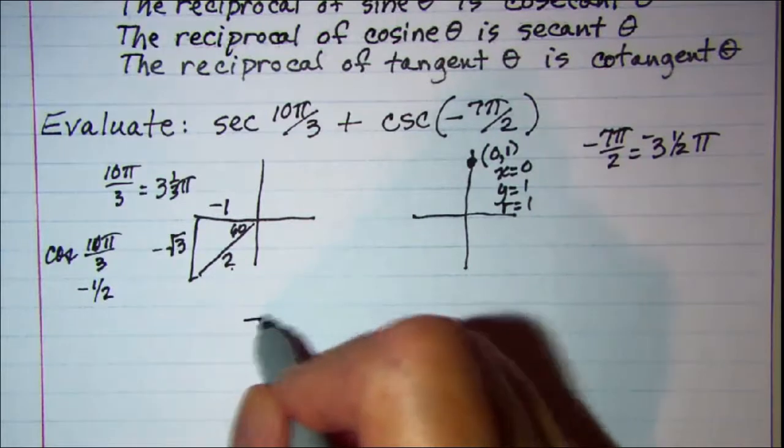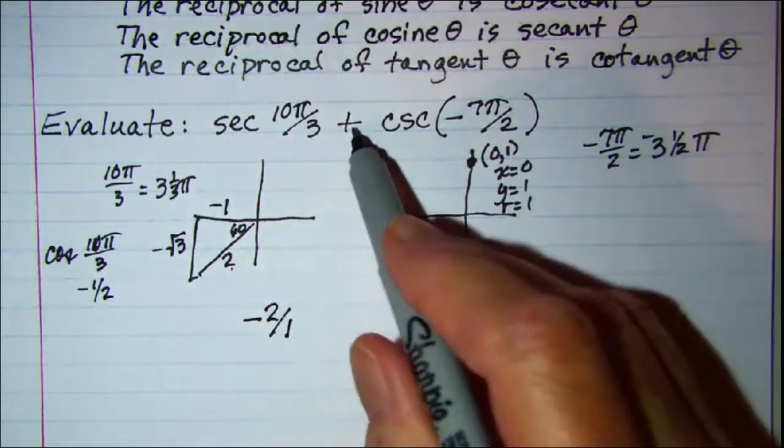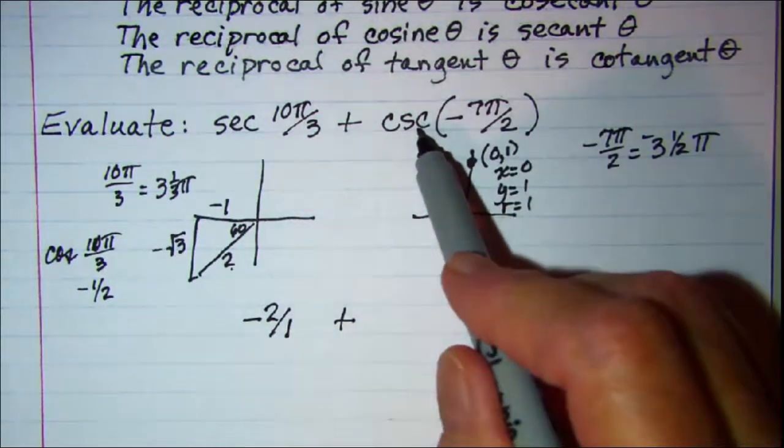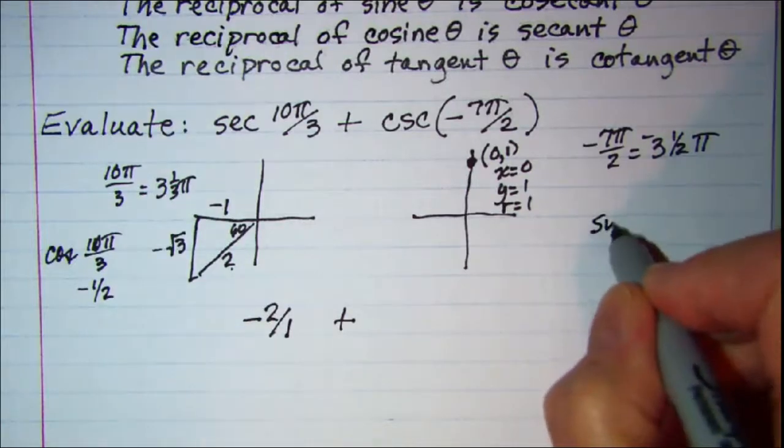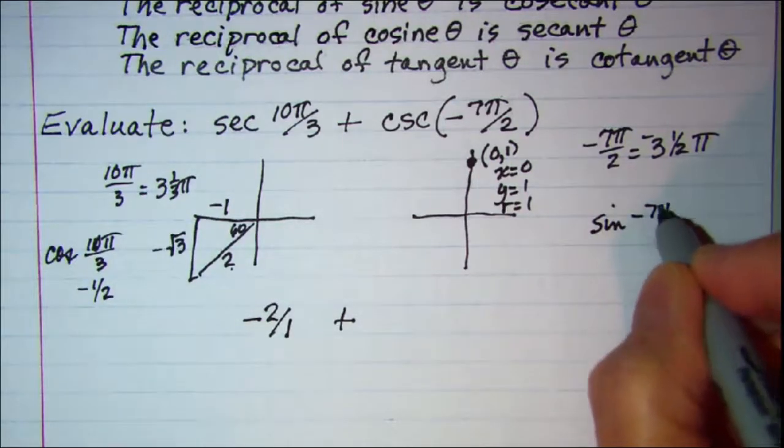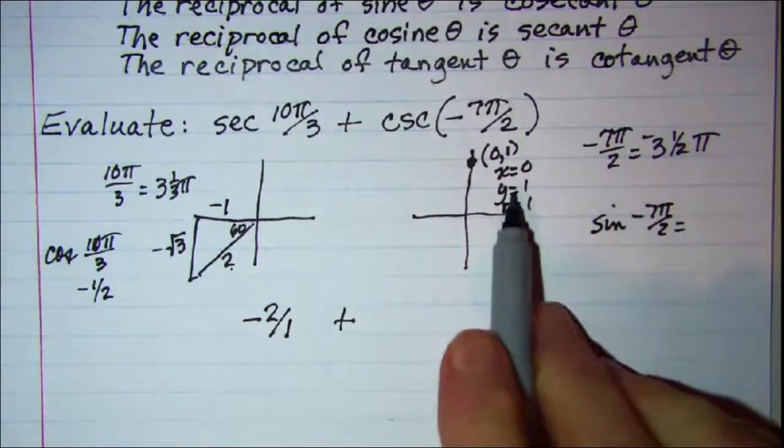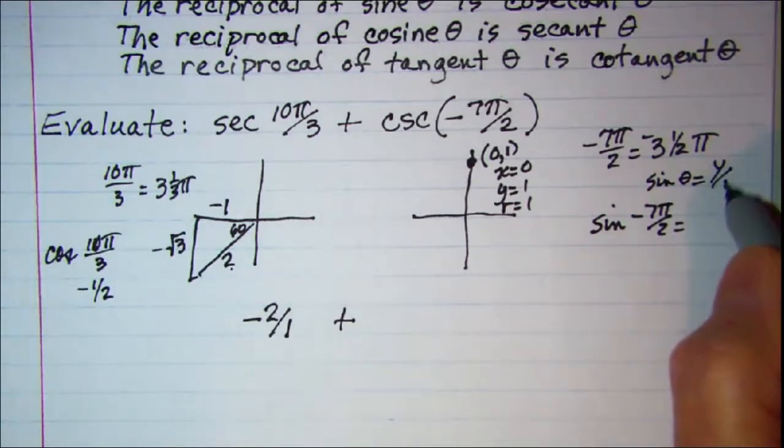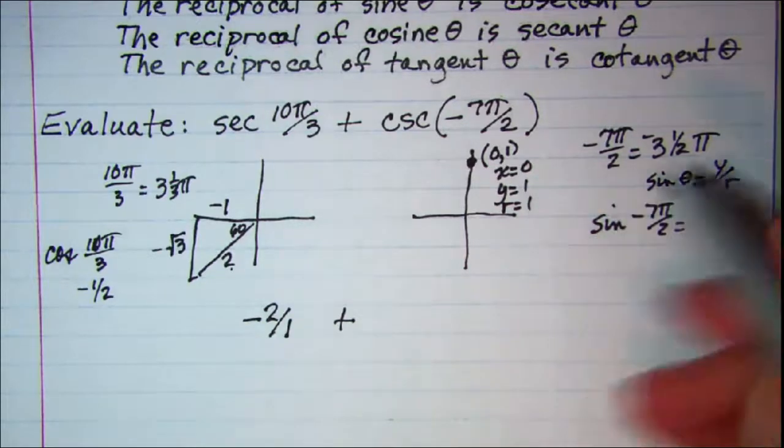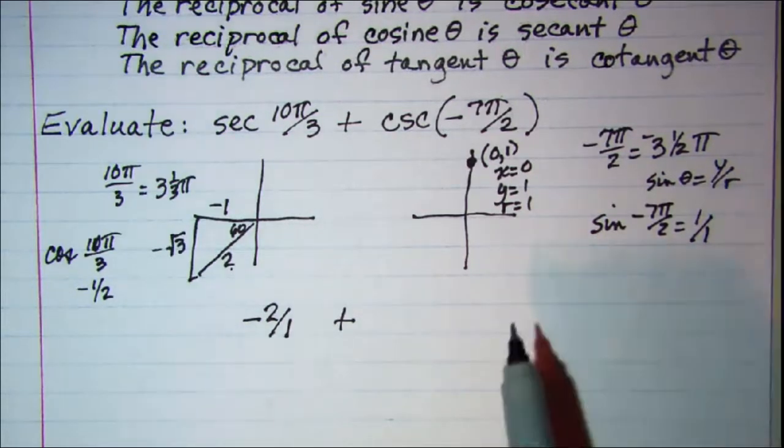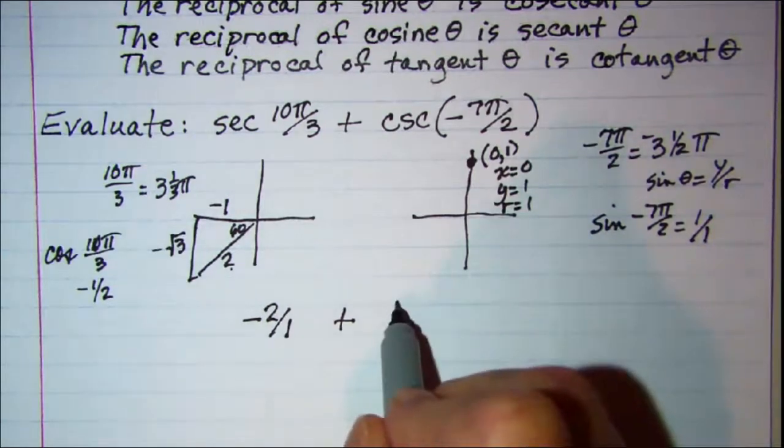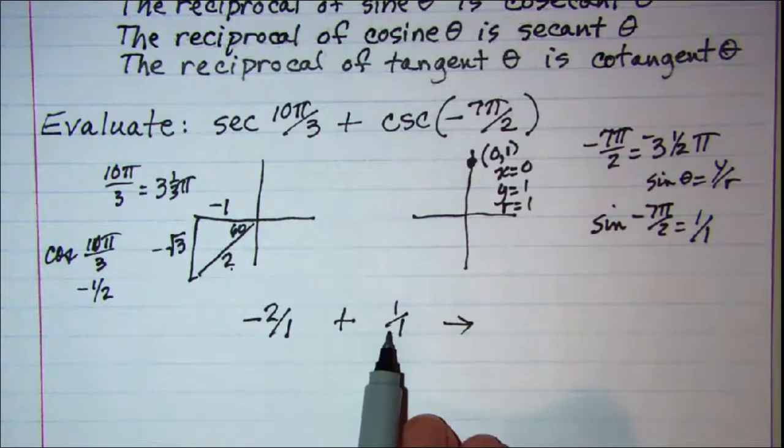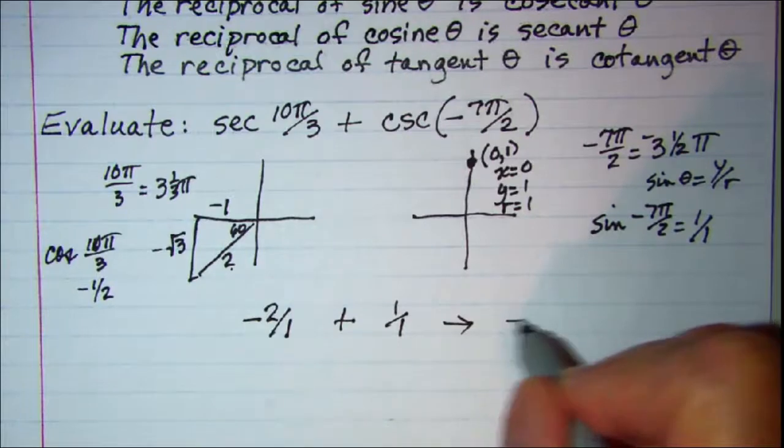So I now have negative 2 over 1 plus my cosecant is the reciprocal of sine. So the sine of that angle is y over r. So y is 1 and r is 1. Now when I flip this upside down it's still 1 over 1. So I basically have a negative 2 and a positive 1 added together. So my answer is negative 1.